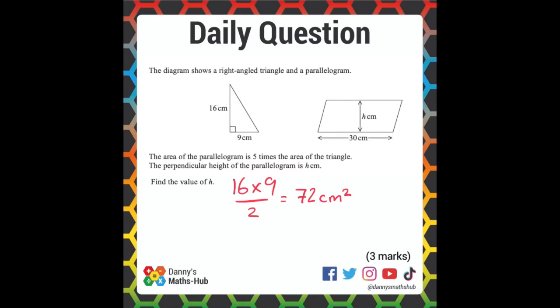Now, we're told that the area of the parallelogram is 5 times the area of the triangle. So we need to do 72 times by 5, because this will tell us the area of the parallelogram, which gives us 360.